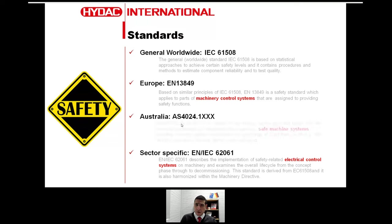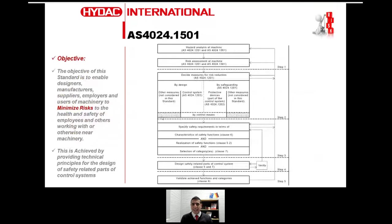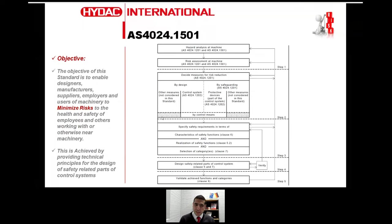The objective of most of these standards is to minimize risk, providing guidelines for designers, engineers, manufacturers, and importers on how to protect health and safety. This is achieved by providing technical principles for the design of safety-related parts of the control system. The first step is performing hazard analysis and risk assessment — performing HAZOPs and different discussions to cross the T's and dot the I's through the process.